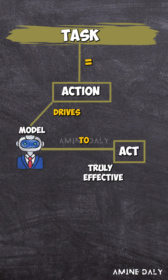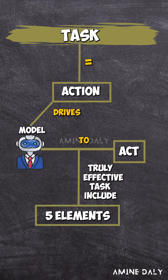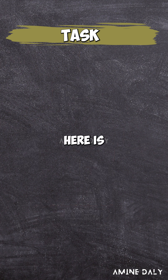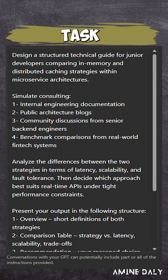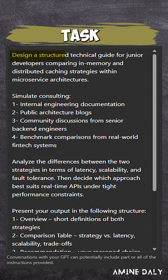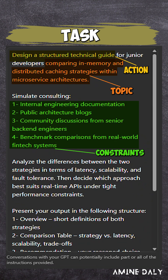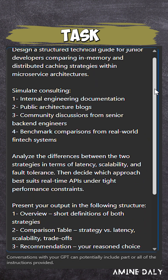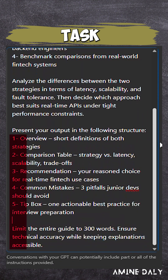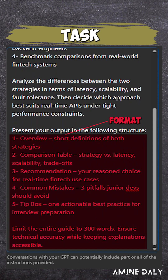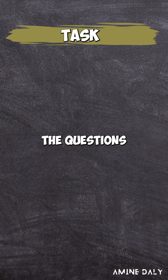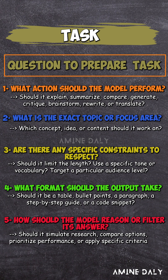A truly effective task can include up to five elements, and here is the task given to our model. In this task, I trigger patterns the model was trained on by defining action, topic, constraints, criteria, and format. I prepare them by answering the questions that the model checks when processing the task.